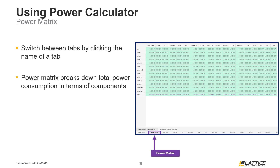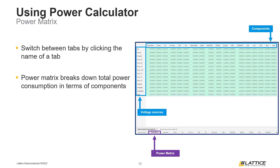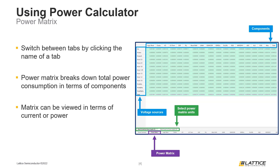The column on the left side of the matrix corresponds to voltage sources in a design, and the top row in the matrix lists each component. Each cell in the middle portion of the matrix is the estimated power consumption for a component. By default, the power consumption will be displayed in terms of current through each component; however, the matrix can be viewed in terms of wattage by selecting Block Power by Power Supply from the area at the bottom of the window. The outside portion of the matrix displays the total power consumption for a component or voltage source. The total static and dynamic power consumption is located in the bottom right of the matrix.